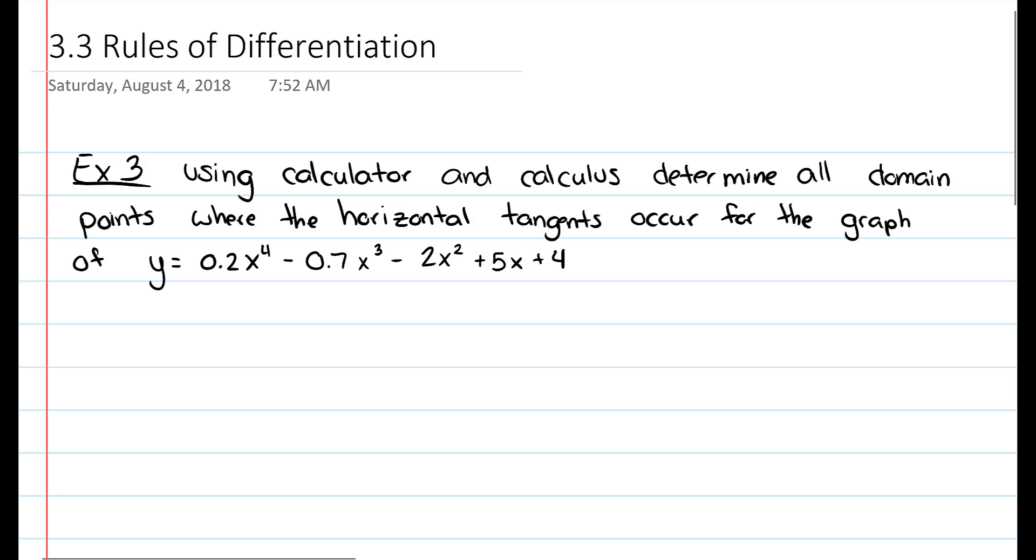In Example 3, we're going to use a calculator and some calculus to determine all domain points where the horizontal tangents occur for the graph of y equals 0.2x to the 4th minus 0.7x cubed minus 2x squared plus 5x plus 4.